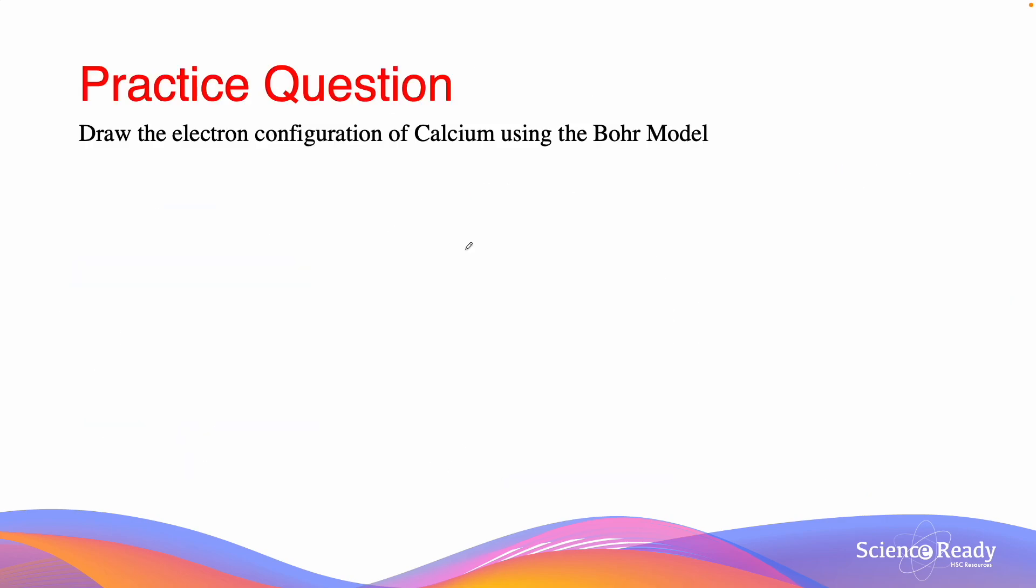Here we'll do an example question. So the question asks us to draw the electron configuration of calcium using the Bohr model. Now grab your periodic tables, and what you'll notice is that calcium is in the fourth period. Since it's in the fourth period, this must mean that it is going to have 4 electron shells for us to draw.